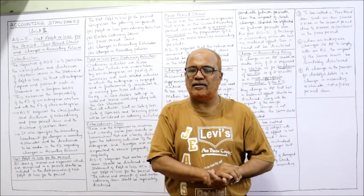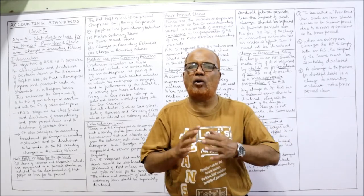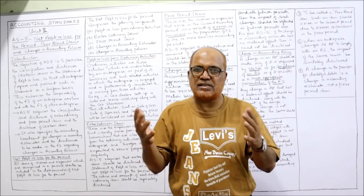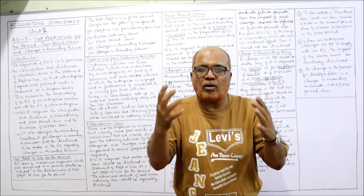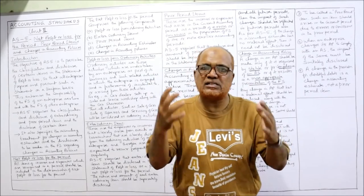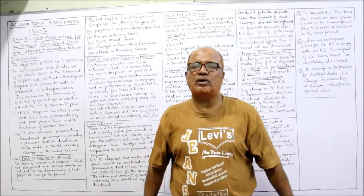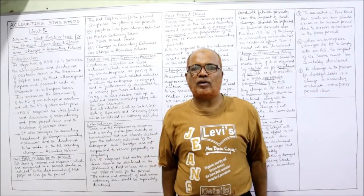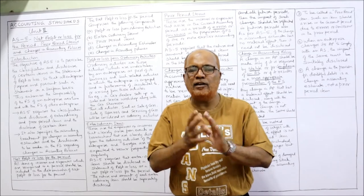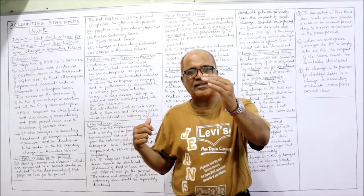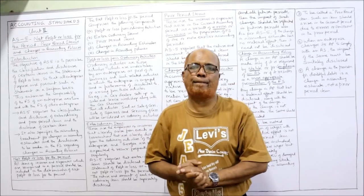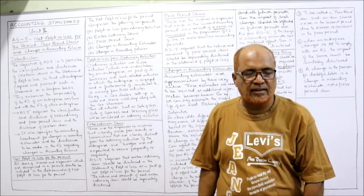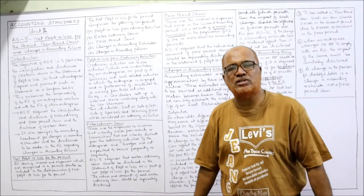Select the subject accounting standards. The first unit covers videos on introduction to accounting standards, objectives, benefits, advantages, the process of formulation, the list of accounting standards, and convergence of Indian accounting standards with global standards. All these are explained in the first unit. Now before starting the explanation of this accounting standard, take a screenshot of the points written on the board.